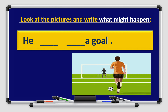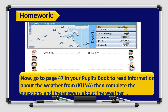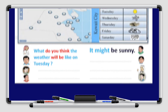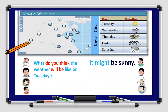Number three: 'He ___ a goal.' That's right — 'He might score a goal.' Might is the modal verb for possibility, 'score' is the verb in the infinitive form. Great job boys and girls! You also have homework on your pupils book page 47: read information about the weather from Kona, then complete the questions and answers about the weather. For example: 'What do you think the weather will be like on Tuesday?' — 'It might be sunny.' Use the weather map and weather forecast to ask and answer questions correctly.